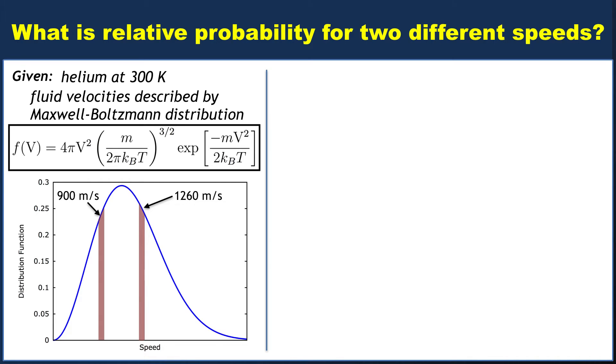In general, the probability of finding a speed between two values Va and Vb is given by the integral from Va to Vb of F dV. We don't want to integrate this, though. It's a huge pain to integrate F. It would be much nicer if we could find a way to simplify this.